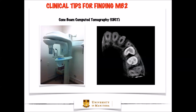Another important technology for us to negotiate and find the second mesobuccal canal is cone beam computed tomography. This technology allows us to observe the mesobuccal root, and you can actually see in this slice two separate canals inside the mesobuccal root. This shows us that in this case, for sure you're going to have a second mesobuccal canal, which gives us more confidence to go after that second canal.